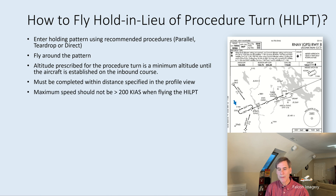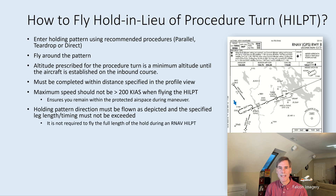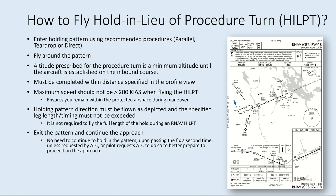The maximum speed should not be greater than 200 knots when flying the hold in lieu of procedure turn, to ensure you stay within the protected airspace. The holding pattern must be flown as depicted and specified, including the leg length and timing on the initial approach fix — but the leg length and timing should not be exceeded. For an RNAV hold in lieu of procedure turn, it's not required to fly the full length of the hold. You can exit the pattern and continue the approach once you've flown the procedural turn — there's no need to continue holding upon passing the fix a second time.